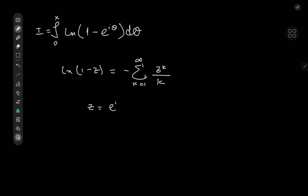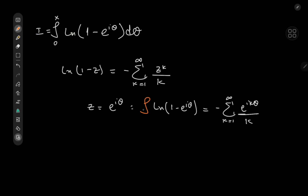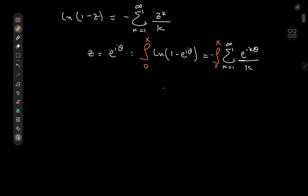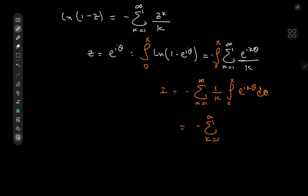So if I replace z by e^(iθ), we have log(1 − e^(iθ)) equal to negative sum over k from 1 to infinity of e^(ikθ) divided by k. The plan was to integrate this, so we integrate from 0 to x with respect to θ. That gives us I equal to negative of the sum over k from 1 to infinity of 1 over k times e^(ikθ) divided by (i·k), with limits 0 and x.